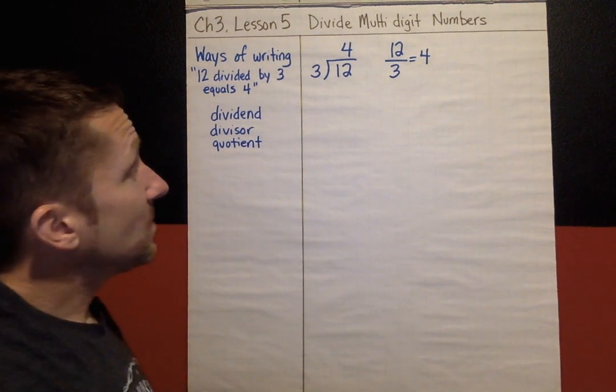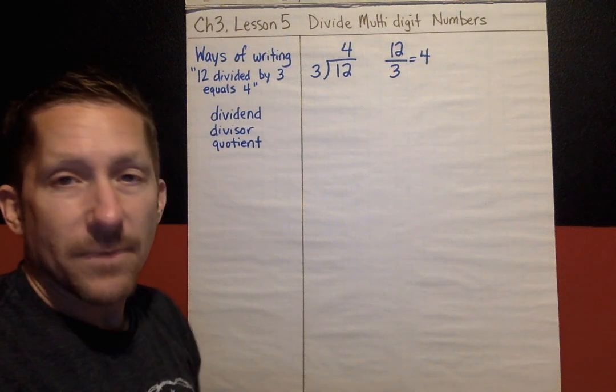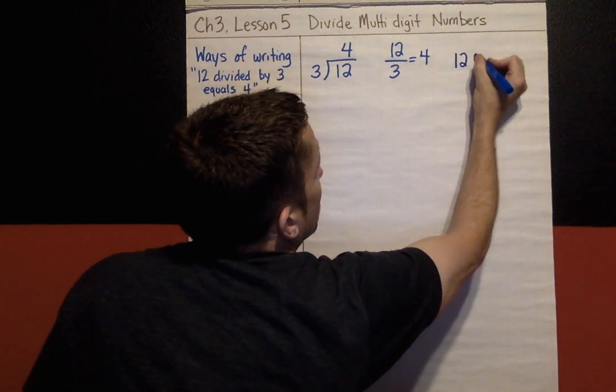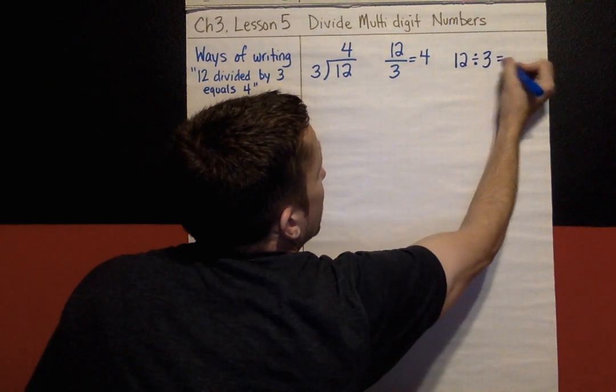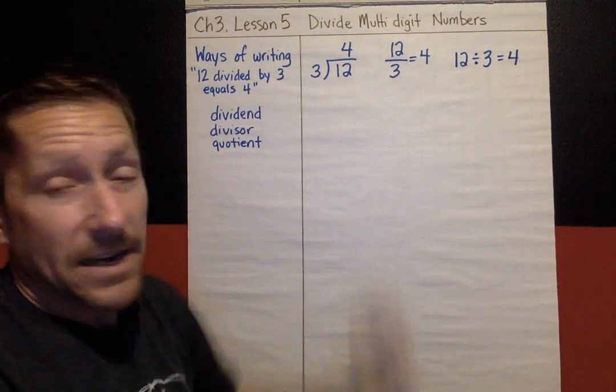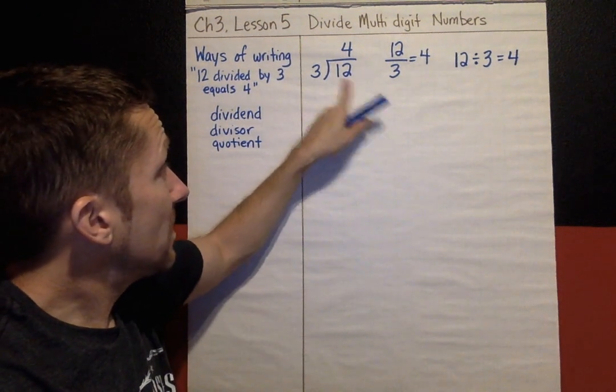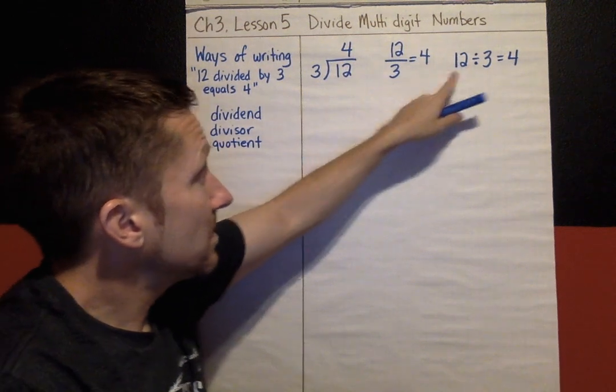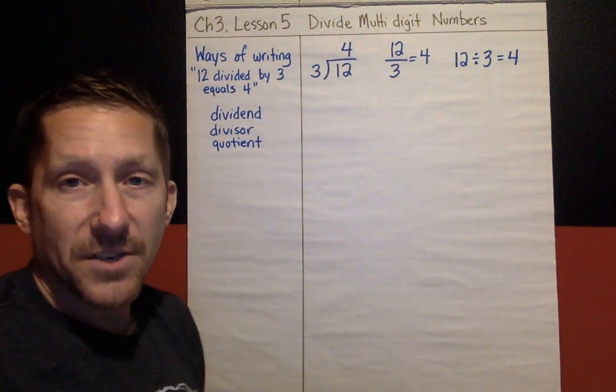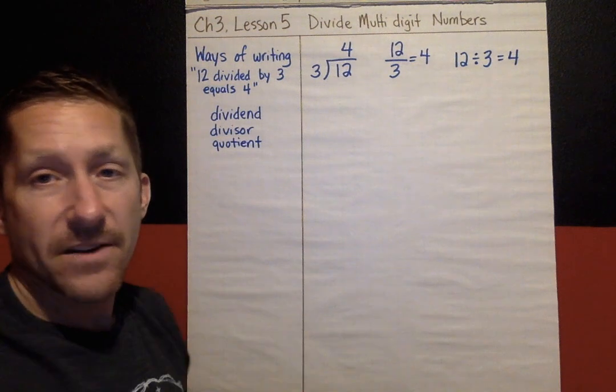And finally the last way that you could write 12 divided by 3 is what it would look like if you were typing it in your calculator. 12 divided by 3 equals 4. All of those three are interchangeable. So 12 divided by 3 equals 4 could be written like this, like this, or like this.